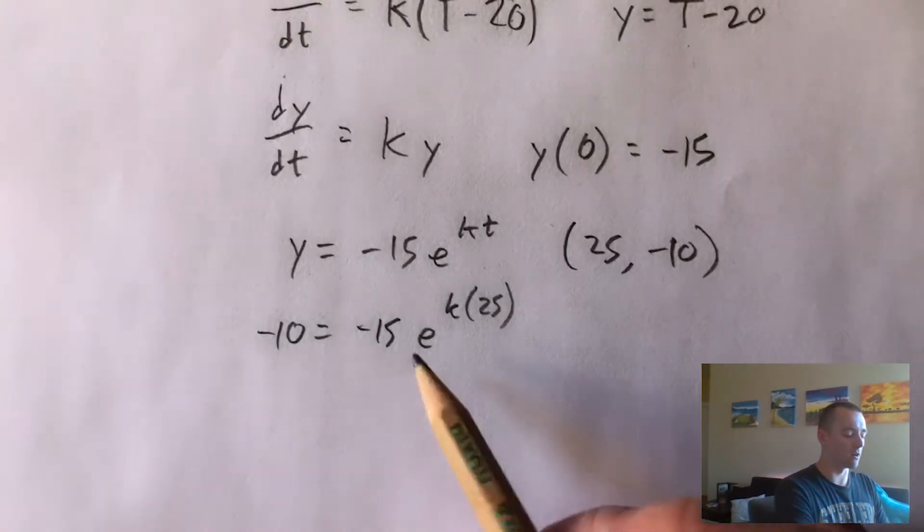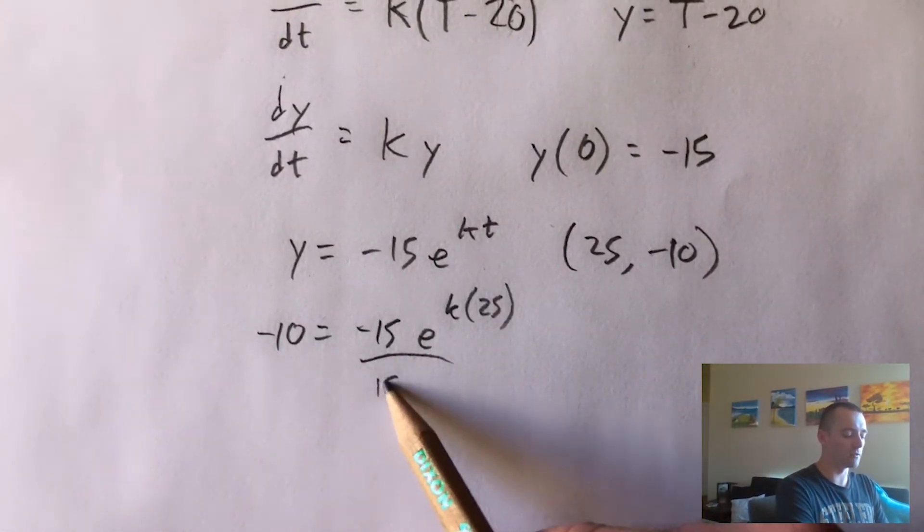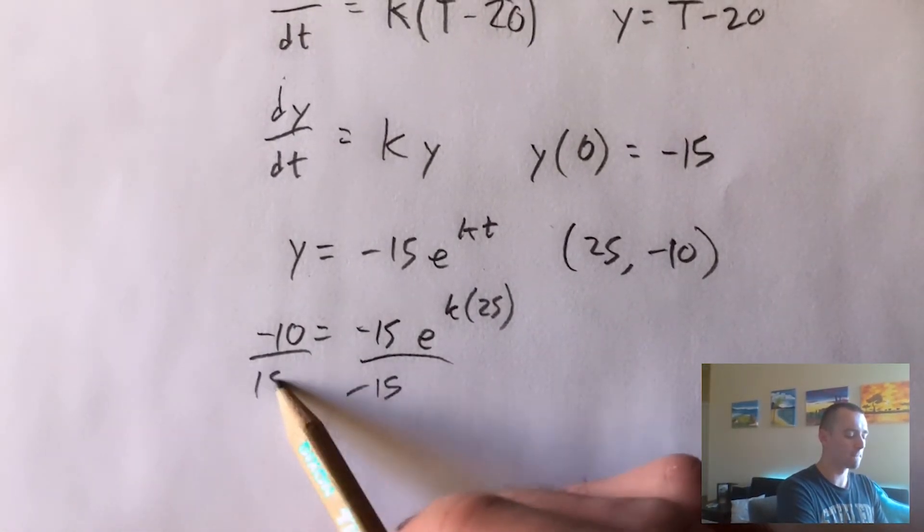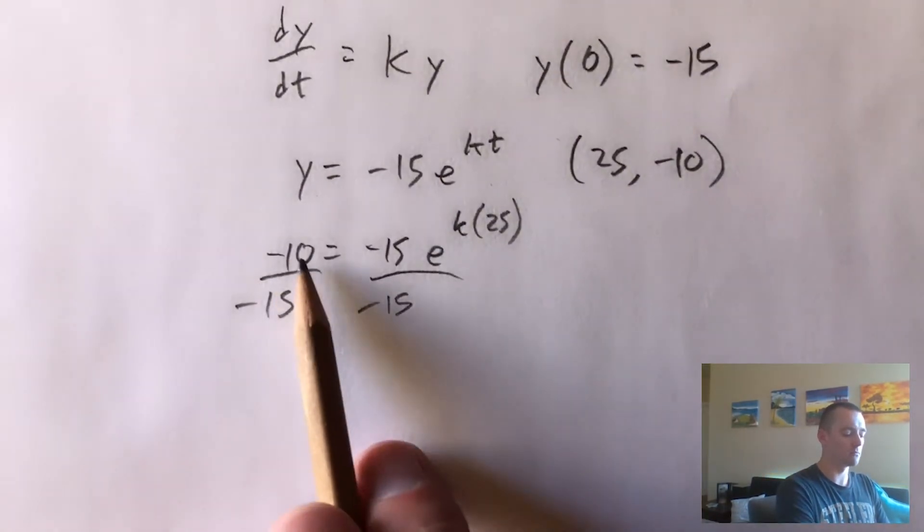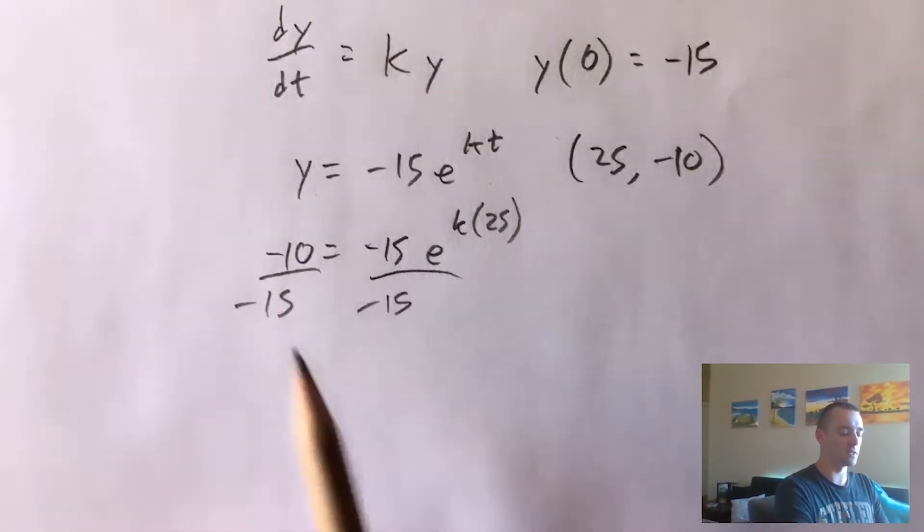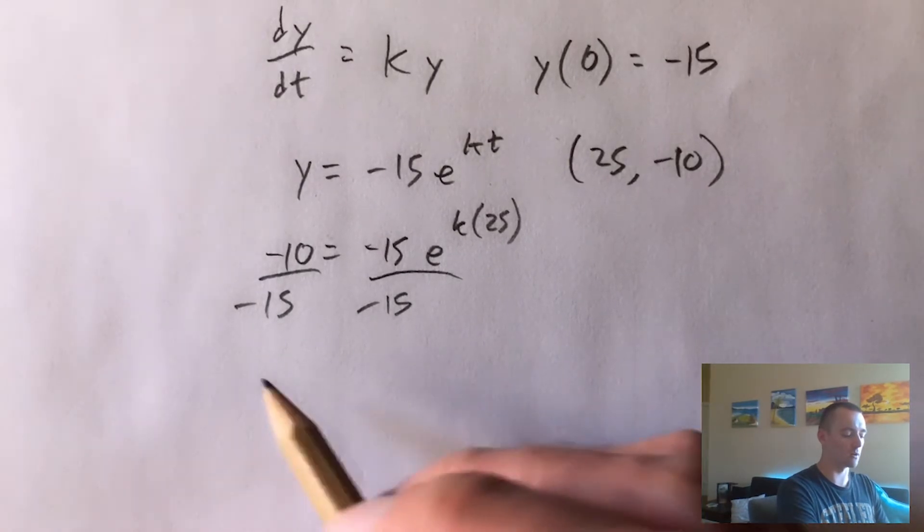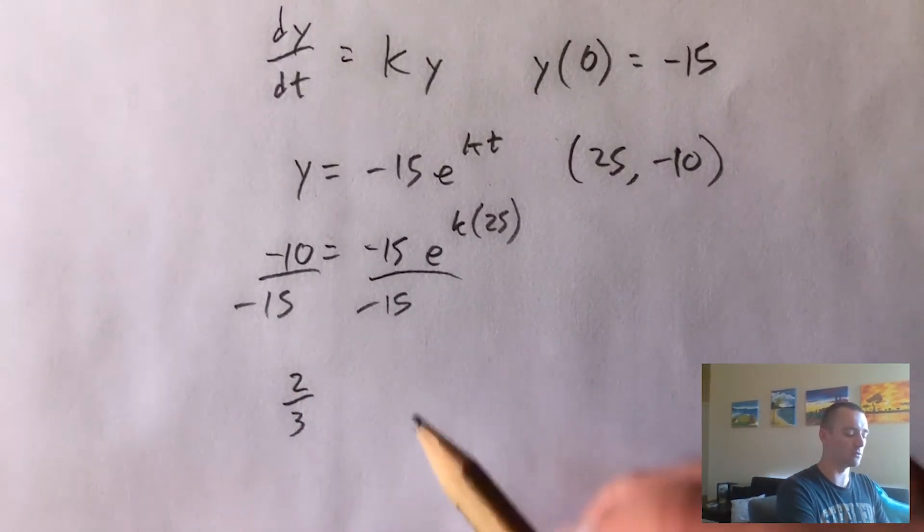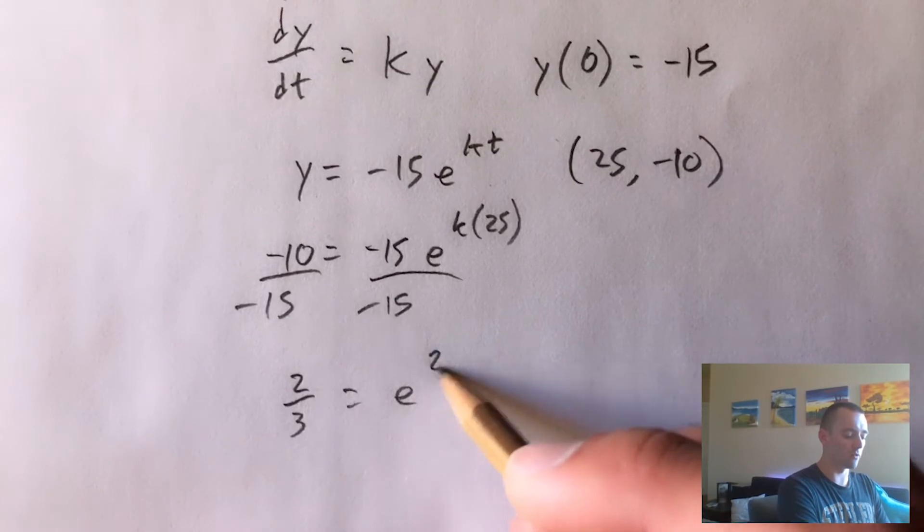And now we just want to get k all by itself. So we would divide both sides by negative 15, giving us two thirds, basically 10 over 15 will simplify to two thirds, and the negatives will cancel equals e to the 25k.